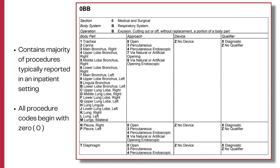All common surgical procedures we generally know of are coded from this section of PCS. This table is an example of respiratory system procedures where the root operation is excision. Procedures like lung biopsy are a good example that are coded from this table.